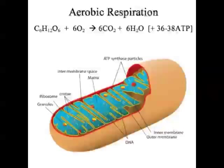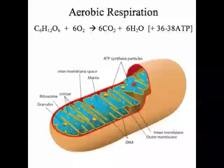Another organelle is the mitochondrion. Mitochondria are basically the energy centres of the cell. Cells use the energy present in a compound called adenosine triphosphate, or ATP. ATP is produced during a reaction called cellular respiration, and in eukaryotic cells most of cellular respiration occurs in the mitochondria. So mitochondria are where aerobic respiration happens, that makes ATP, and that's how cells get their energy.